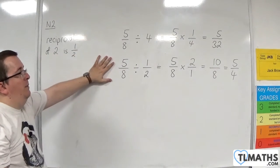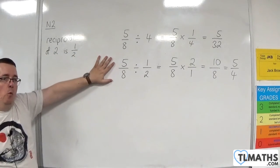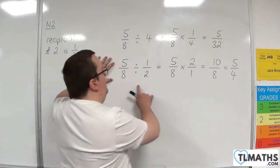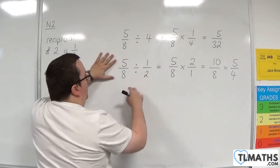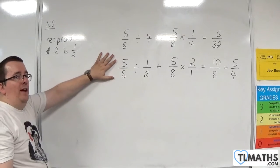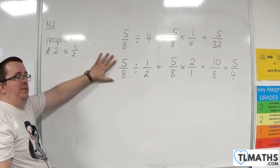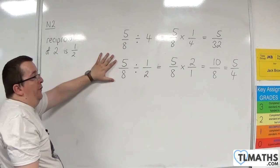But this time, when I'm dividing by a number between 0 and 1, I actually end up with a larger number. Because essentially, I'm asking how many times can I get 1 half into 5 eighths? How many halves go into 5 eighths? And that's 5 quarters.